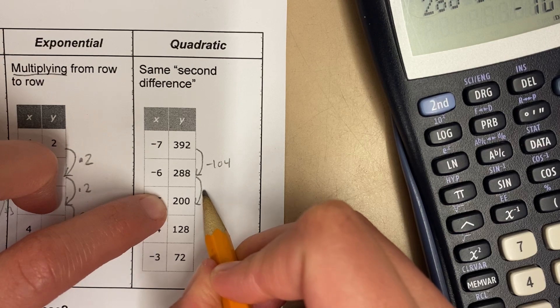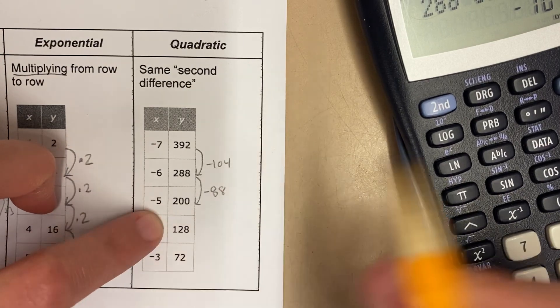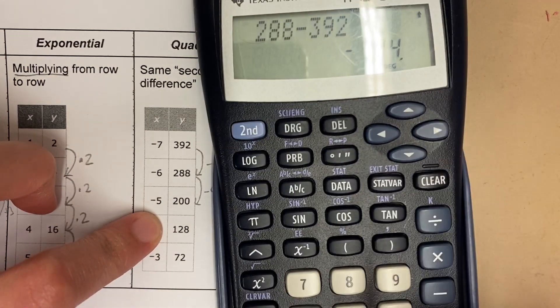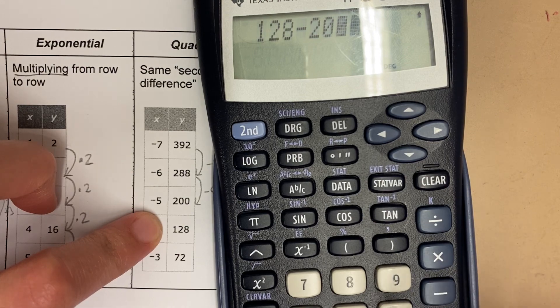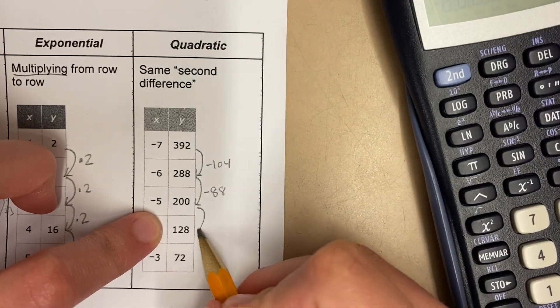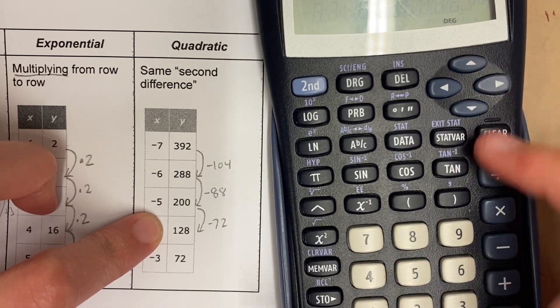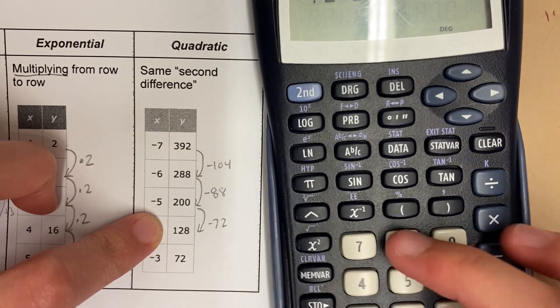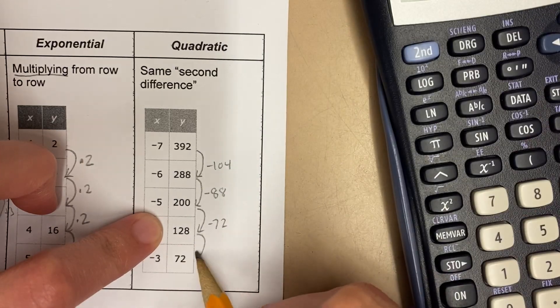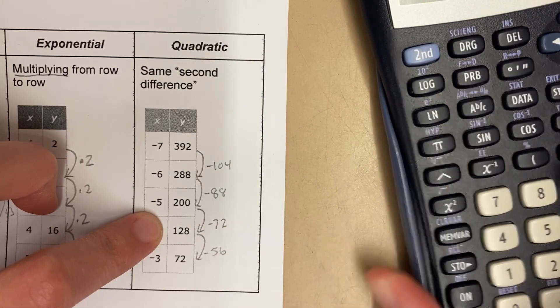From 288 to 200, this is minus 88. From 200 to 128, 128 minus 200, that's minus 72. It's hard to see a pattern here, huh? 72 minus 128, that's minus 56. Really challenging to see a pattern.